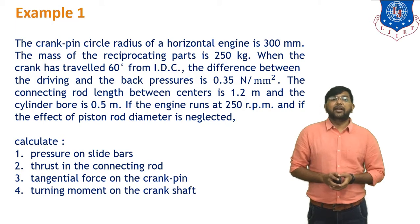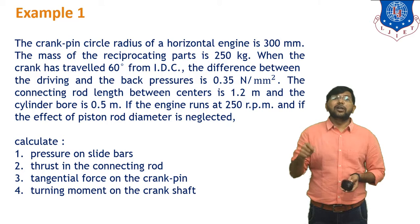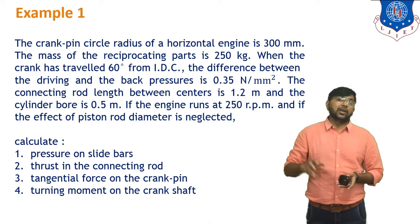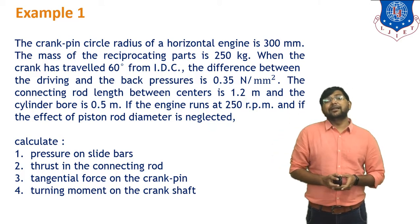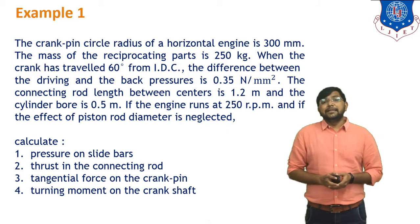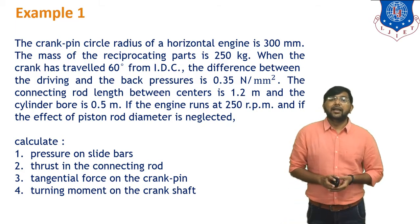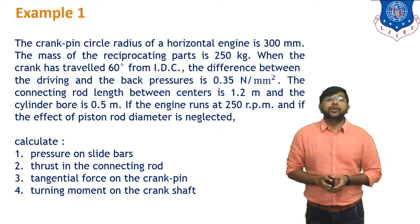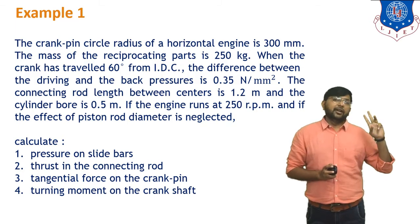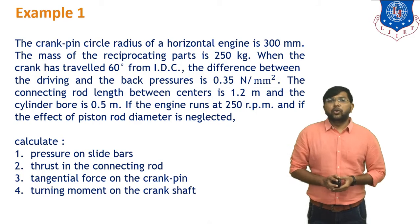The difference between driving and back pressure is 0.35 N/mm² (gas pressure p_g = 0.35 N/mm²). The connecting rod length between centers is l = 1.2 m. The cylinder bore diameter D = 0.5 m (500 mm). The engine runs at N = 250 RPM. We need to calculate: (1) pressure on the slide bar, (2) thrust in the connecting rod, (3) tangential force on the crank pin, and (4) turning moment on the crankshaft.